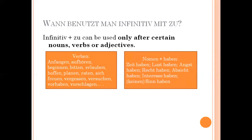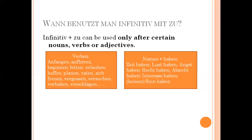The second set is nouns used with 'haben': Zeit haben (to have time) — for example, 'Ich habe keine Zeit ins Kino zu gehen' (I have no time to go to the cinema). Lust haben (to be interested/in the mood), Angst haben (to be afraid), Recht haben (to be right), Absicht haben (to have an intention), Interesse haben (to have interest), Sinn haben (to make sense) — 'keinen Sinn haben' means it is senseless.